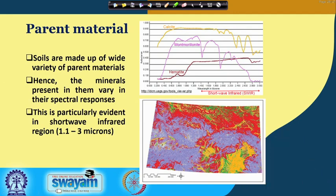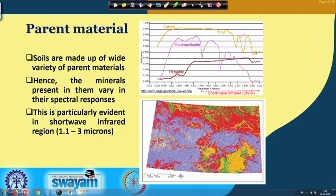Parent material data is also very important — it is an important factor in the SCORPAN model. Soil is made up of a wide variety of parent materials: it can be made of calcite, montmorillonite, hematite — these different types of clay minerals and other minerals which characterize different types of rocks. These individual minerals all have their own spectral patterns. Calcite has its own spectral patterns, montmorillonite — an important soil clay mineral — also has important peaks, and hematite has its own peaks in the short wave infrared region as well as the visible region.